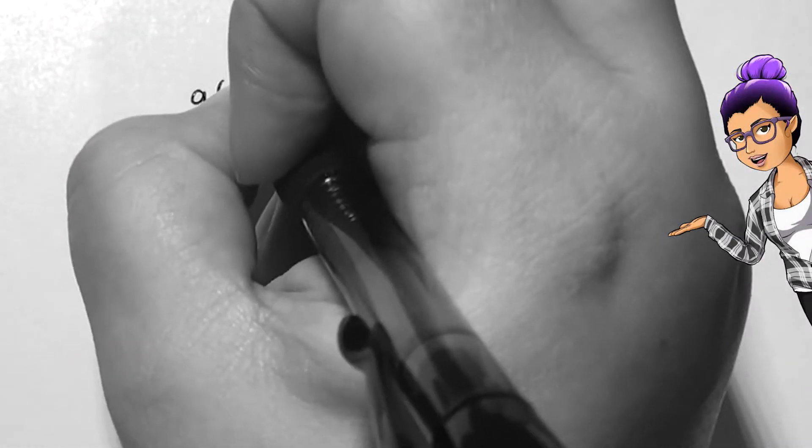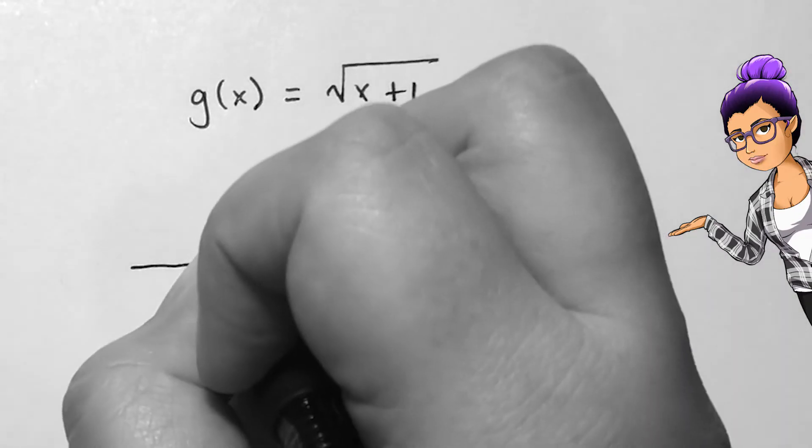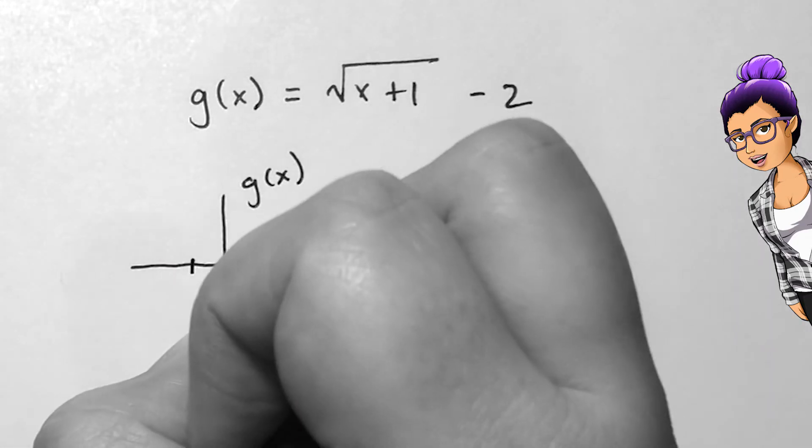I may also want to do this with a more complicated function like g(x) = √(x + 1) − 2. Here I take the square root function and shift it to the left by 1 and down by 2.